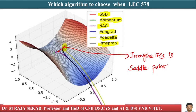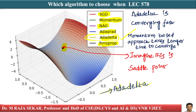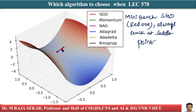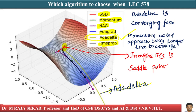We notice that AdaDelta is converging fast — see that yellow line moving fast, corresponding to AdaDelta. Other ones like momentum-based approaches also converge, which is the green line, but it takes longer time. The momentum-based techniques took a while to get out of the saddle point problem.